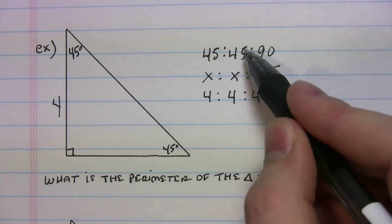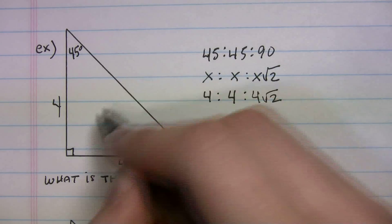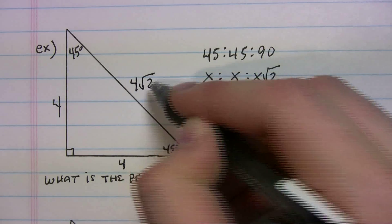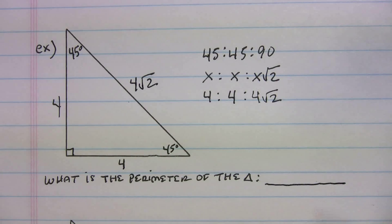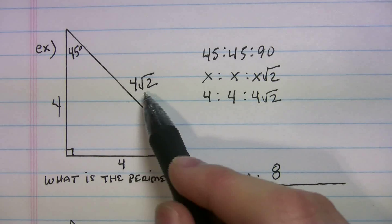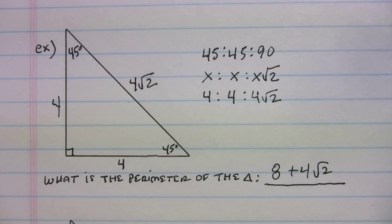So I can put my sides in now. Opposite 45 is 4. Opposite the 90 is 4 radical 2. What's my perimeter? 4 plus 4, that's 8, plus 4 radical 2. Nothing much we can do more with that. That expression is in simplest form. So you just leave it like that. You're fine.